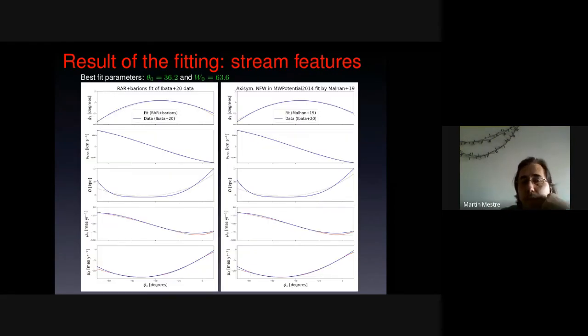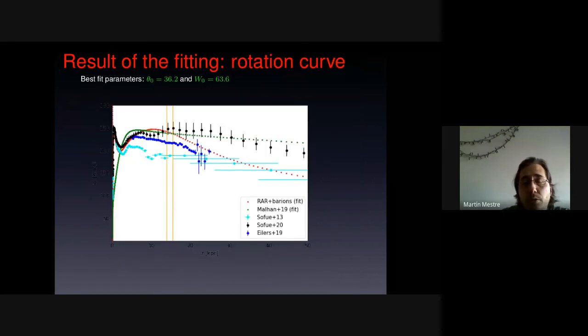And now we check what happens with the rotation curve. We see that the rotation curve of our fit, which is in red, more or less moves between the rotation curve of the data. The green rotation curve is from the fit from Malhan for the axisymmetric dark halo. What I want to point out here is that between 14 and 15.5 kiloparsecs, which is the range covered by the observed stream, not the range that the stream travels all around its orbit.